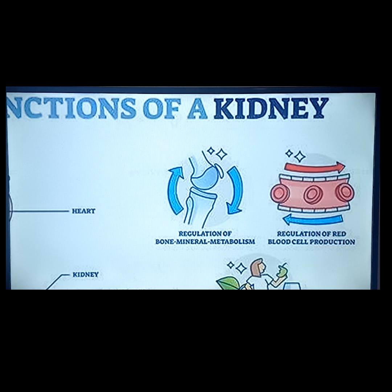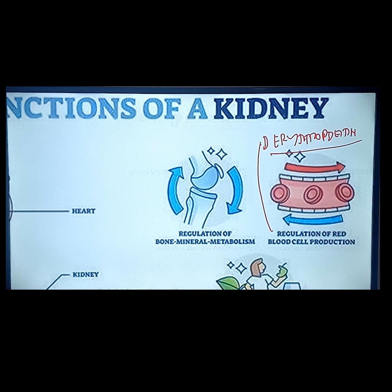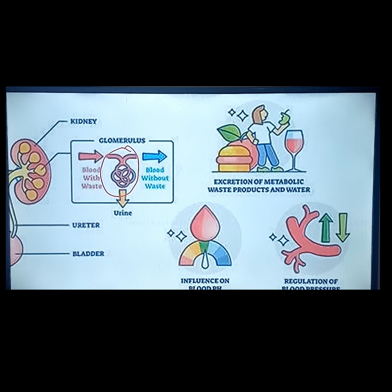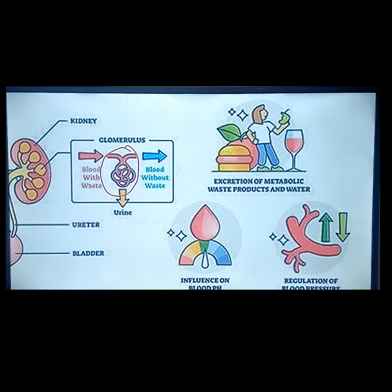Another function is the regulation of red blood cells. This is in relation to the hormone called erythropoietin. Erythropoietin is a hormone produced by your kidney that facilitates erythropoiesis — it stimulates the production of RBC in the bone marrow. Another function is the excretion of waste products. Everything we eat and drink has waste products; it will be detoxified by the liver and go to the kidney for filtration, then excreted through urine.